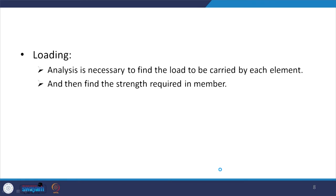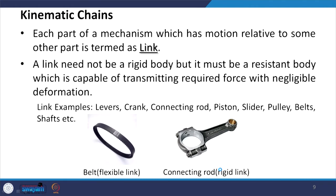Loading analysis is necessary to find the load carried by each element, and based on that we can find the strength required in a particular member — this must be considered in mechanical design. Each part of a mechanism which has motion relative to some other part is termed a link. A link need not be a rigid body, but it must be a resistant body capable of transmitting the required force with negligible deformation. Examples include levers, cranks, connecting rods, pistons, sliders, pulleys, belts, and shafts.